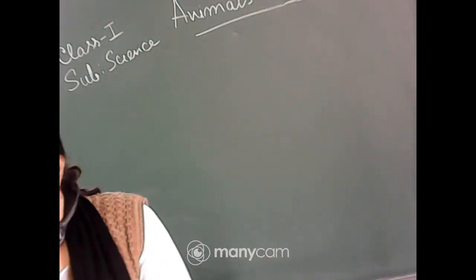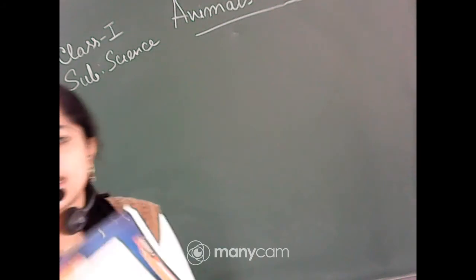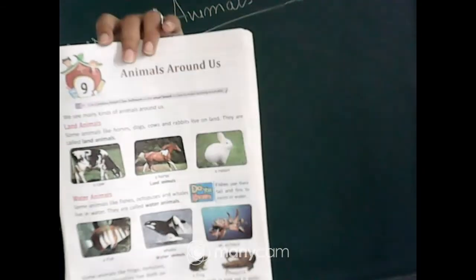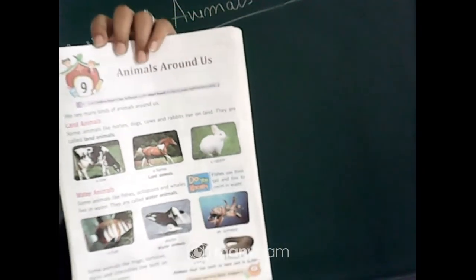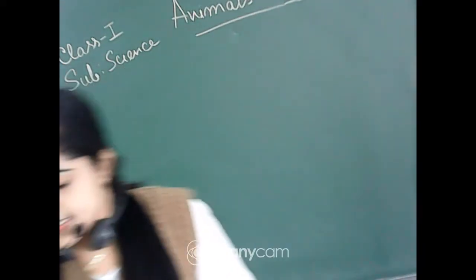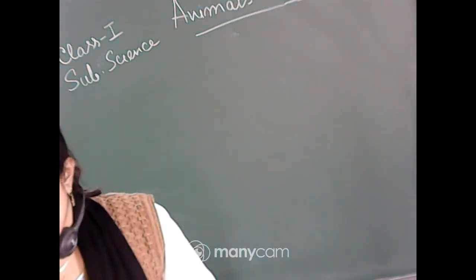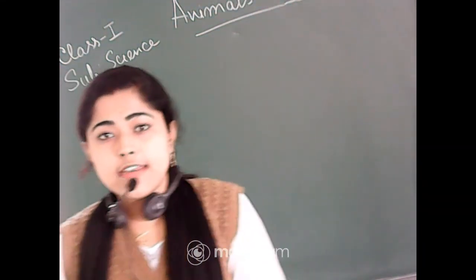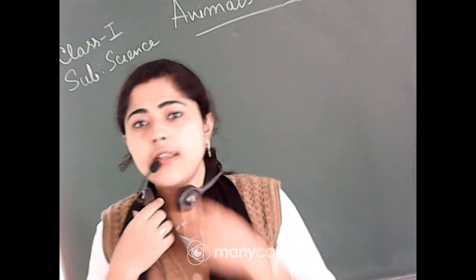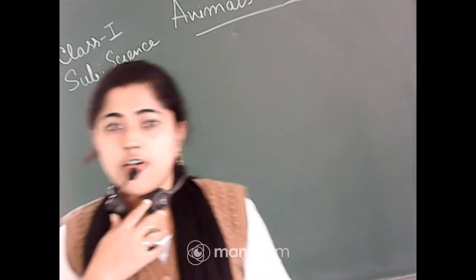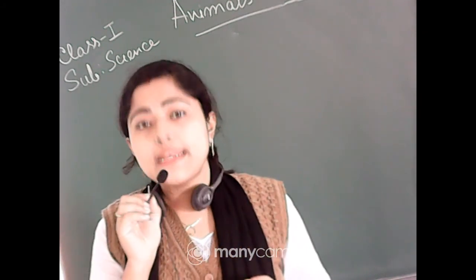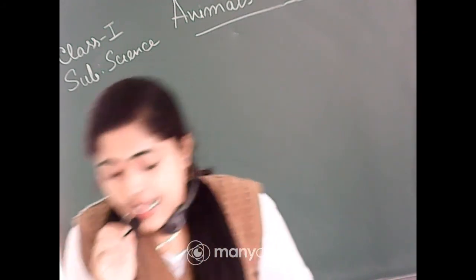Open your book at page number 37. Here you can see that some animals are divided into parts. First of all, you have to learn about land animals.